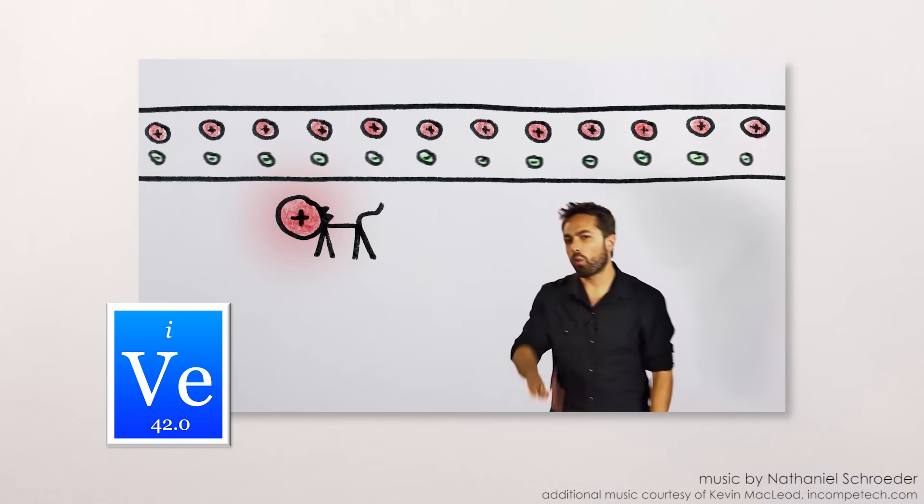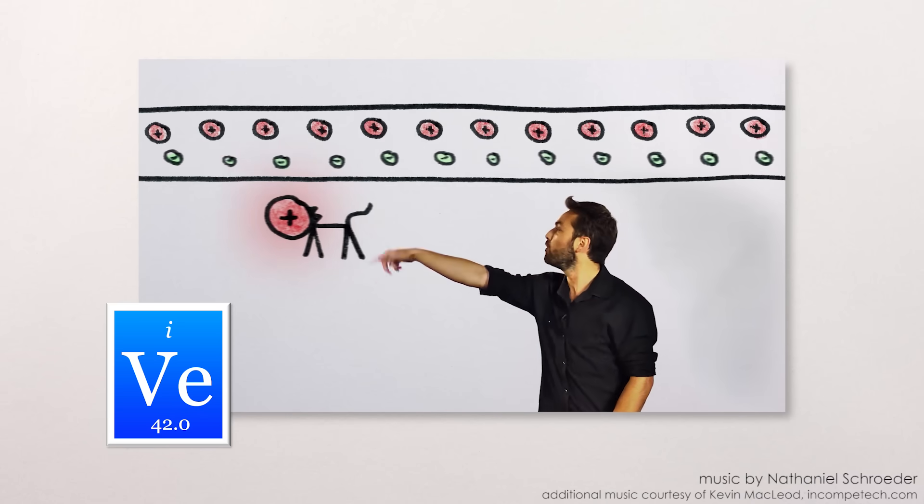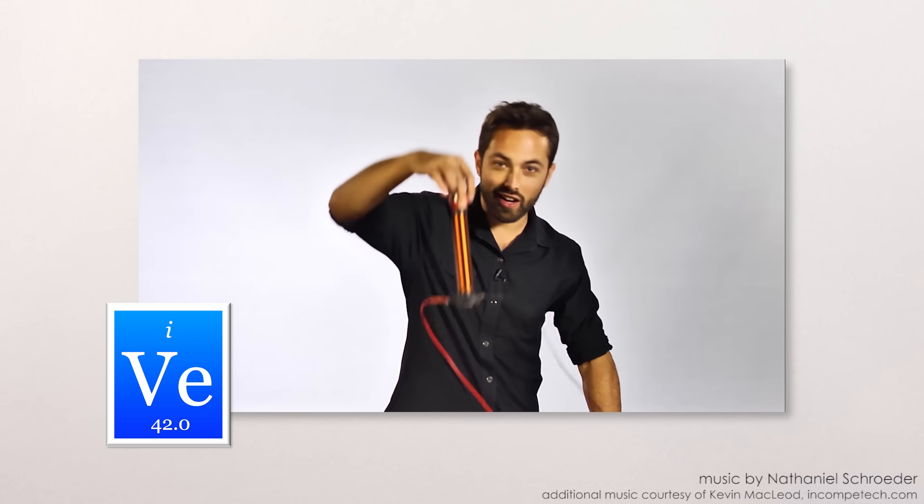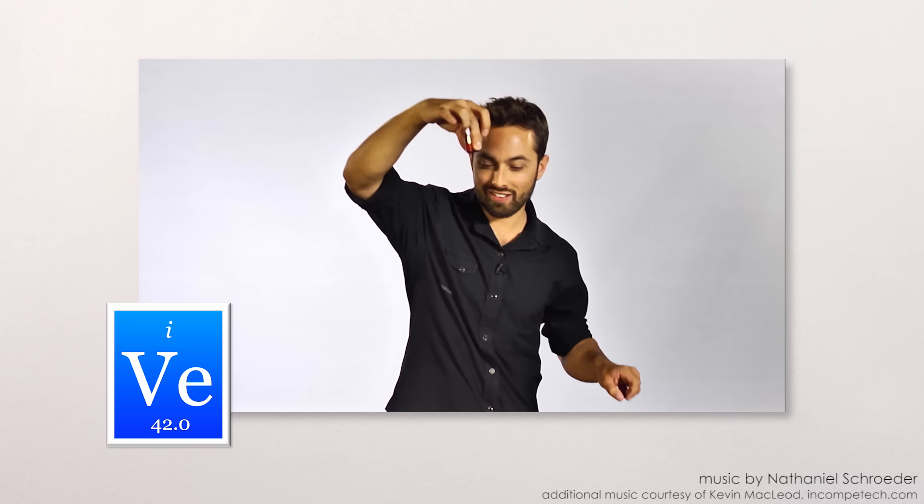But hey, why does that work in the first place? Click here to go over to Veritasium, and we'll find out what special relativity and the speed of light have to do with electromagnets. I want to find out.